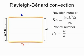In Rayleigh-Bénard convection, a layer of fluid is heated from below and cooled from above. The dynamics of the system depends on two control parameters: the Rayleigh number, which indicates the dimensionless temperature difference, and the Prandtl number.